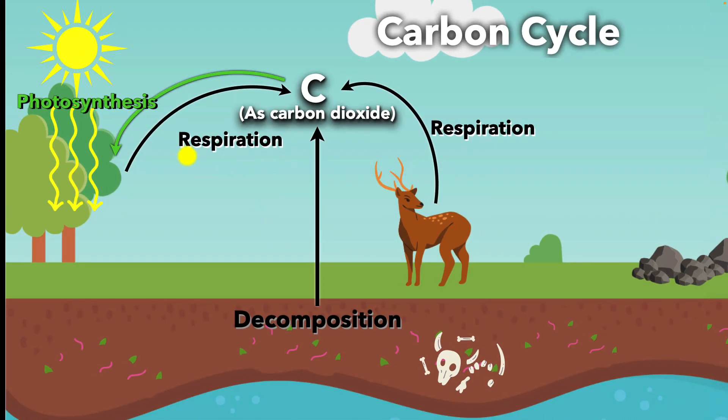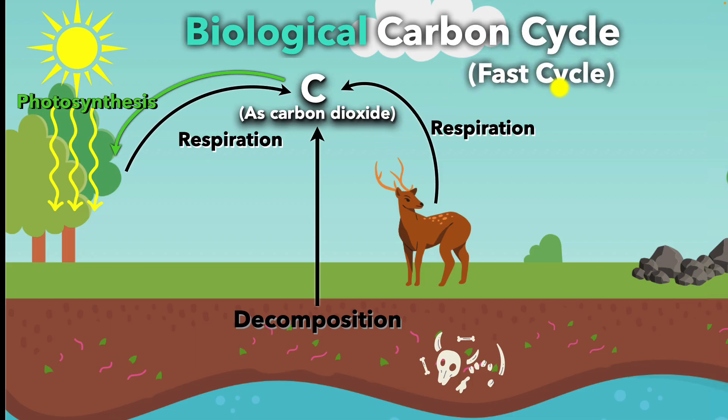Now, these three processes—photosynthesis, respiration, and decomposition—make up the biological carbon cycle. This cycle moves carbon between the atmosphere and organisms, and it happens relatively quickly, often within years. That's why it's also called the fast cycle.